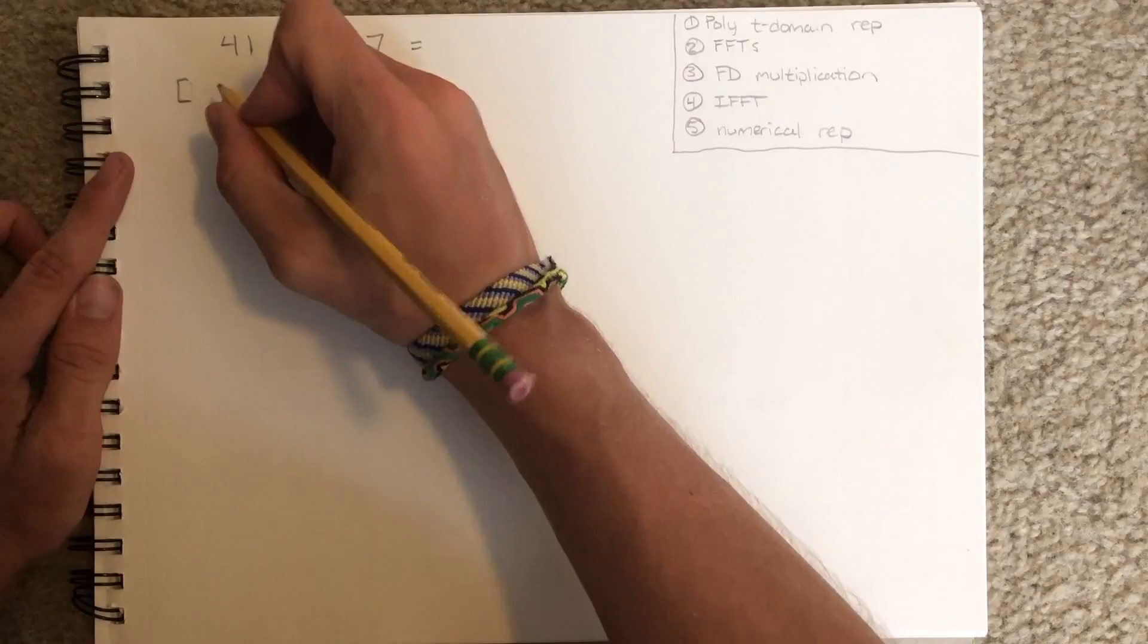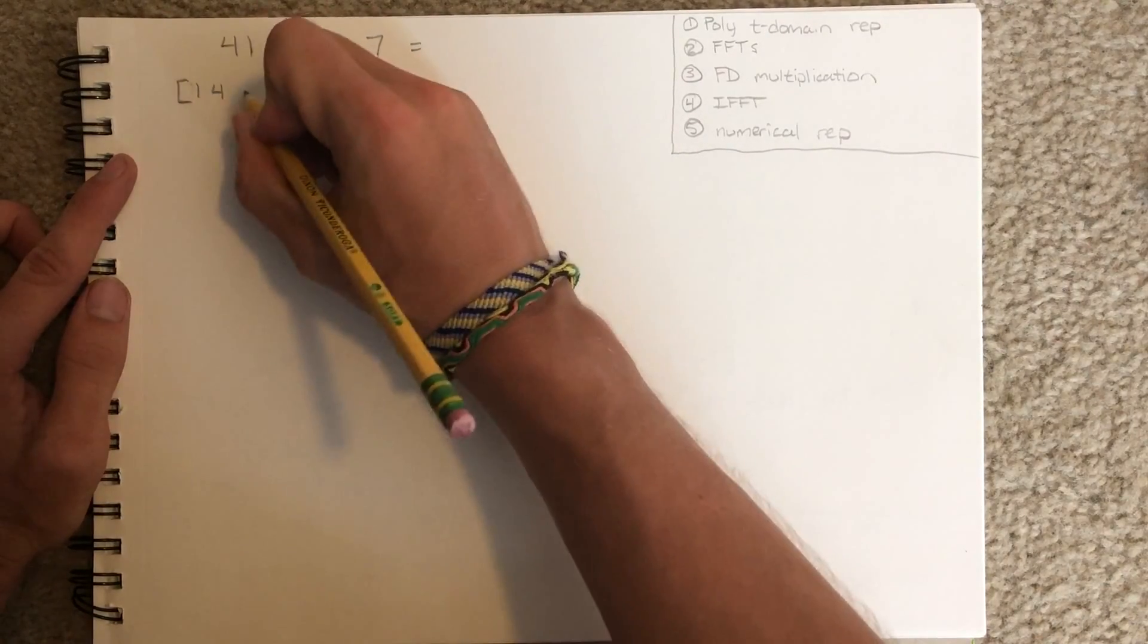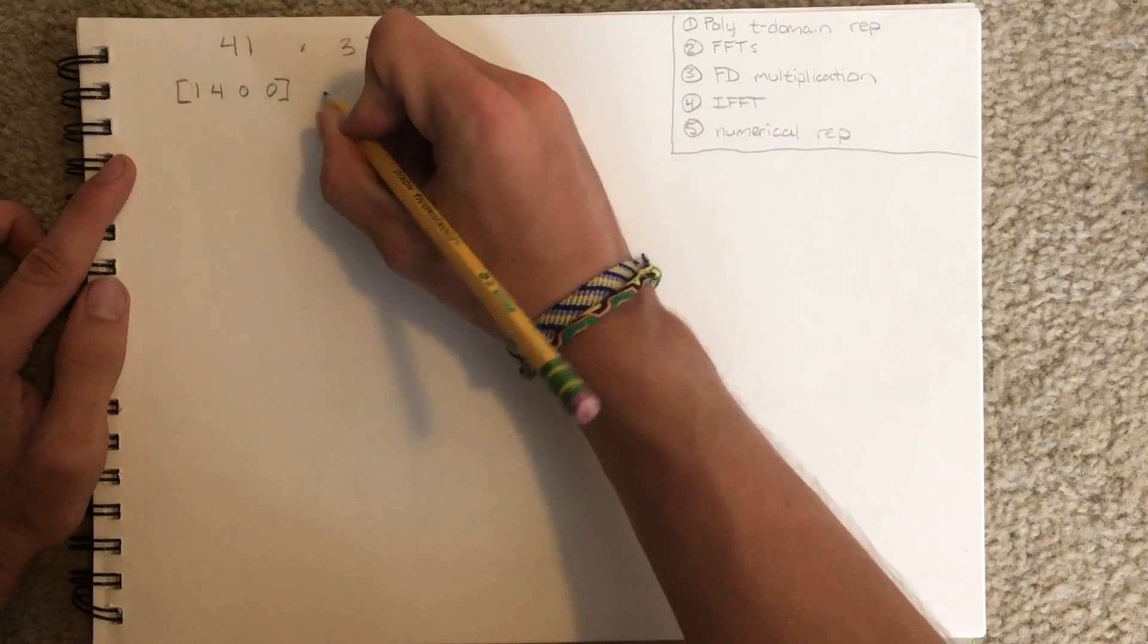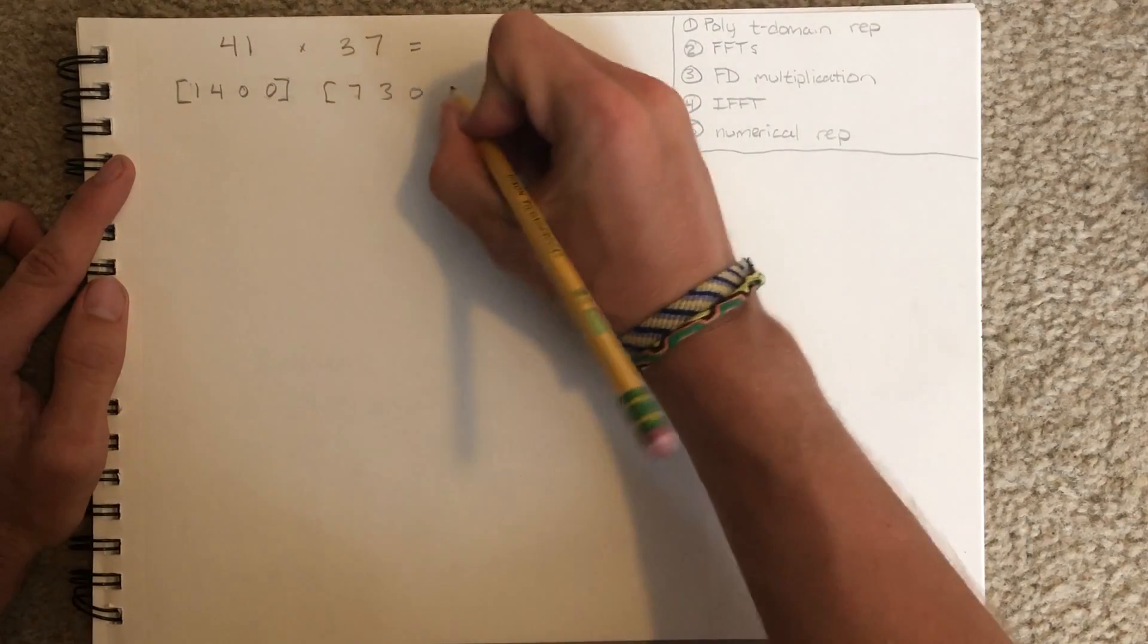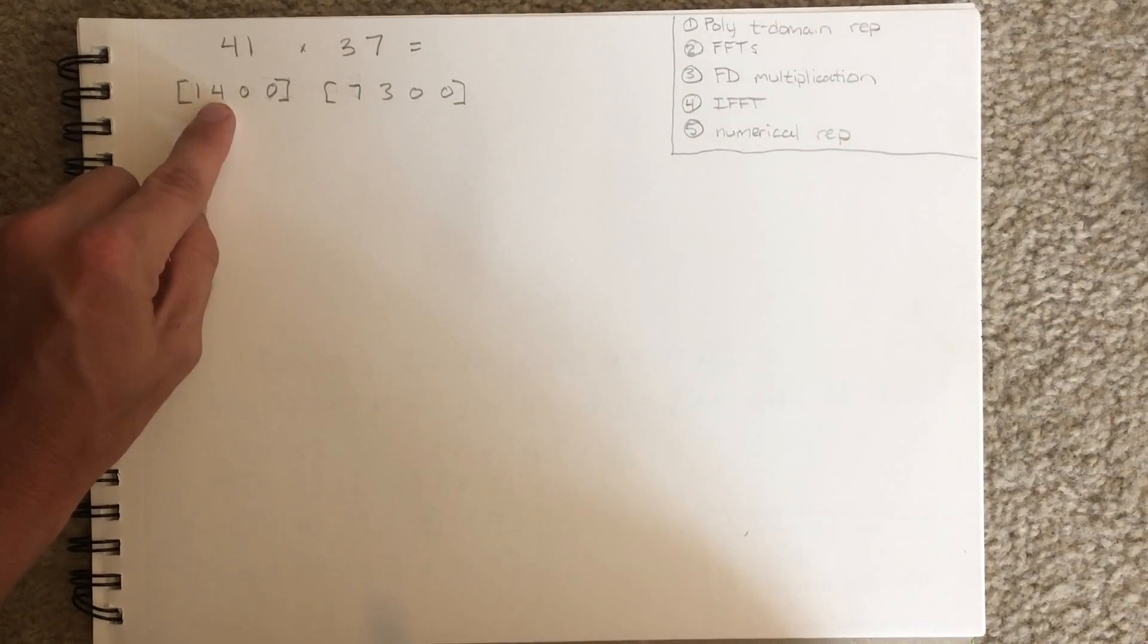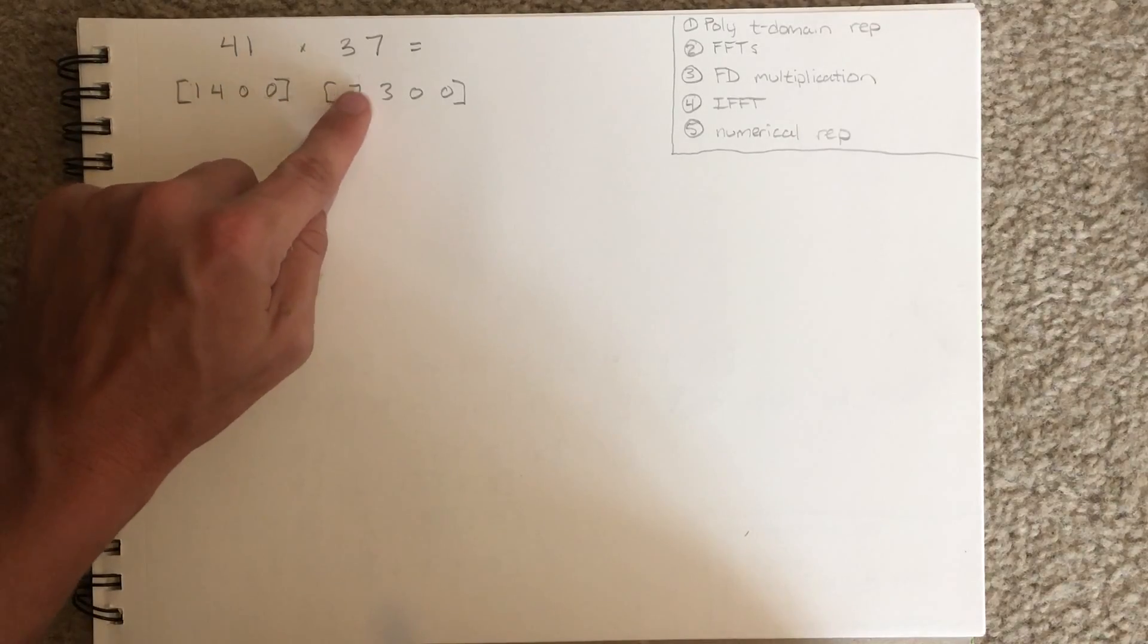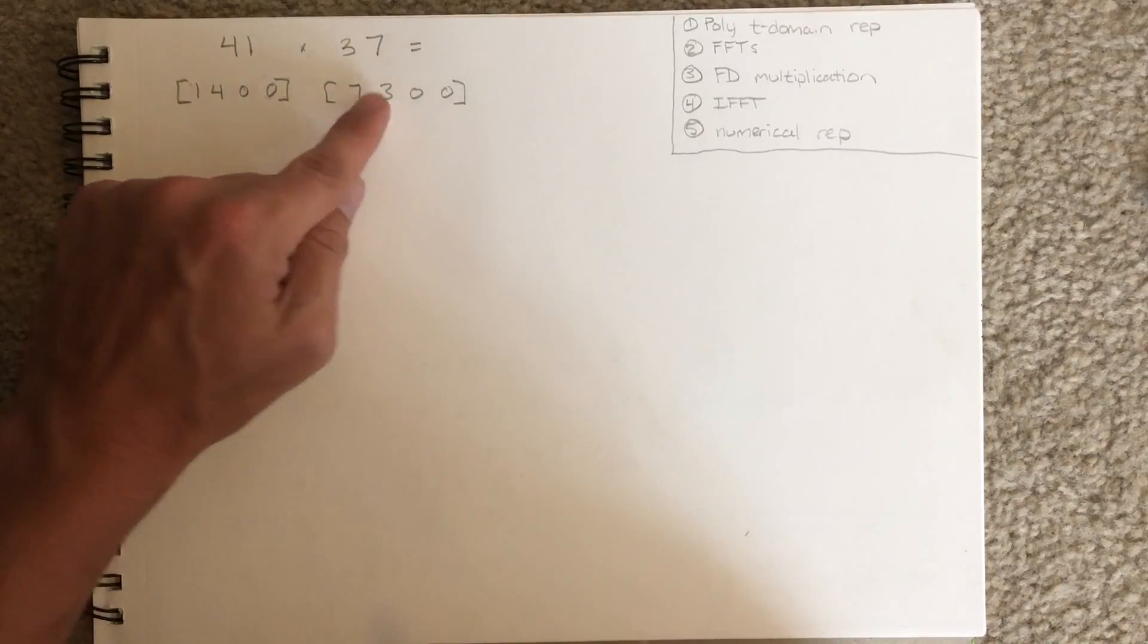Step one is to express in polynomial time domain form. Here, the first element represents the ones column. Second, tens. Hundreds, thousands. Same over here. Ones, tens, hundreds, thousands. So, 40 plus 1 is 41. 30 plus 7 is 37.